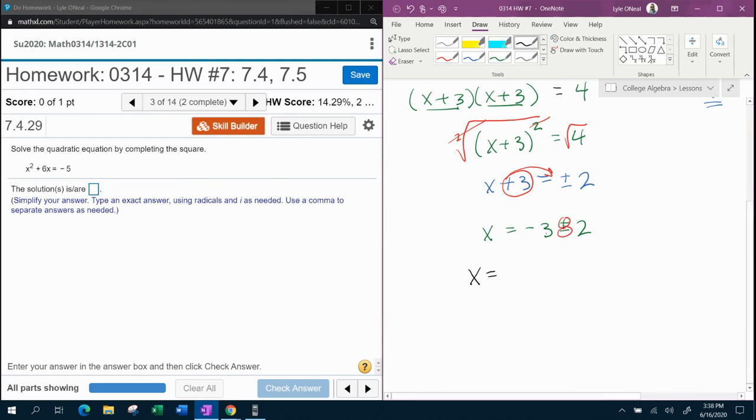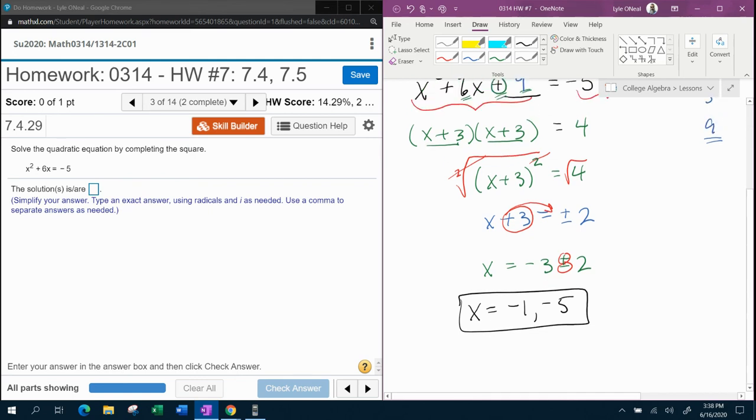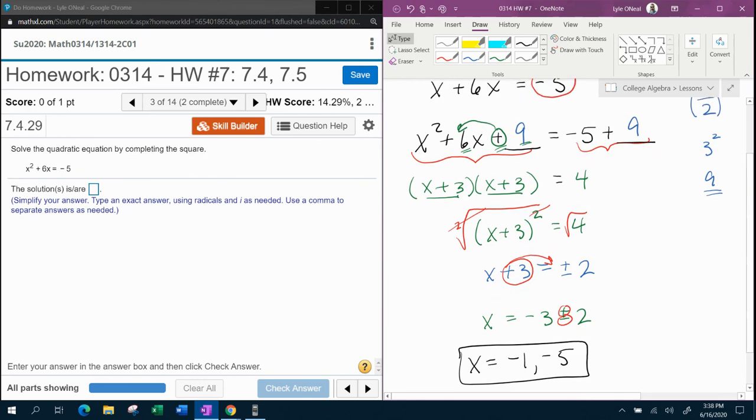So we're going to do negative 3 plus 2, which is negative 1. And we're going to do negative 3 minus 2, which is negative 5. And remember, every quadratic has two solutions. Those are going to be my two solutions from completing the square.